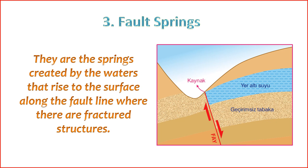5. Flow Characteristics — the flow of water from fault springs can be intermittent or continuous, depending on factors such as the rate of groundwater recharge, the size of the aquifer, and the geological conditions along the fault. 6. Environmental Significance — fault springs can play a crucial role in sustaining local ecosystems by providing water sources for plants and animals. They may also contribute to the formation of unique geological features in the surrounding landscape.